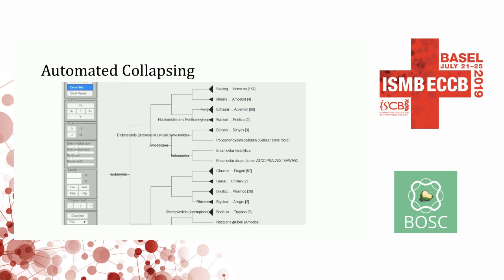Another thing is you can automatically collapse the tree. You can either do it by node depth, or if the tree is annotated in particular ways with internal features, you can use those features — for example, to say you want to collapse at the genus level or species level. So there's a variety of ways to collapse the tree.